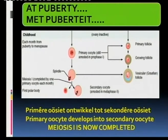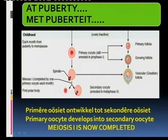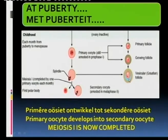So now meiosis 1 is completed, the reduction of the chromosome number is established. And this is what you see — the Graafian follicle, that is the one in the ovary.